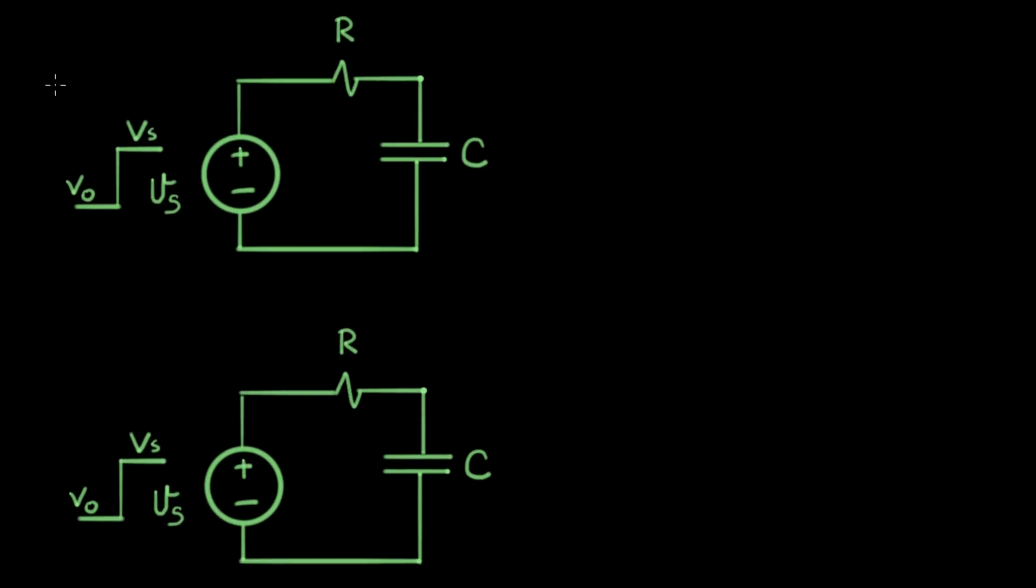So here's two copies of our circuit. On the top one here, we're going to solve for the natural response, and on the bottom one, we'll use that one for the forced response. Let's go to work on the natural.